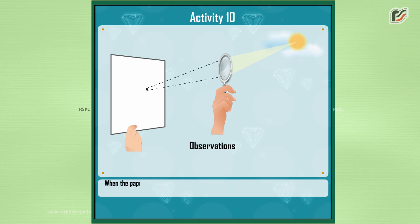Observations. When the paper and the lens are held in the same position for some time, the paper starts burning at the position of sharp image because of heat produced by sun rays, concentrates on the spot where the image is being formed.